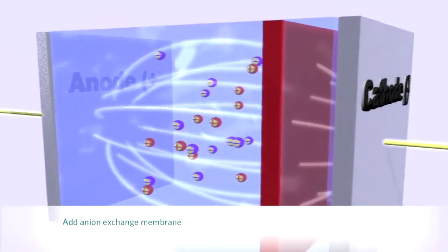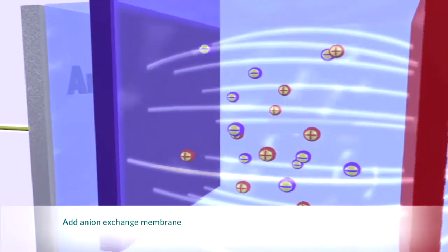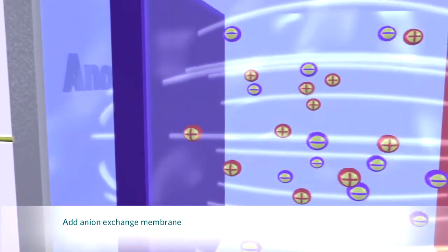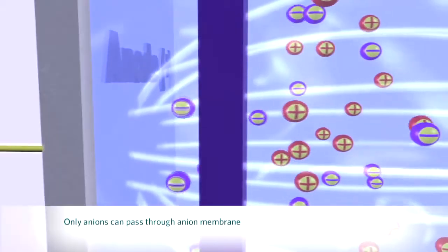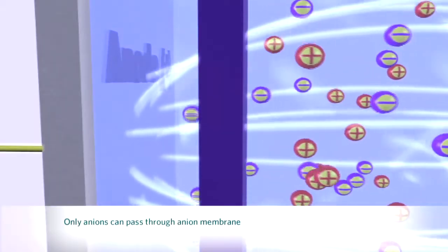When we insert another ion exchange membrane, this time made out of anion-selective resins, it will block the flow of cations and water molecules. Only anions will be able to pass through to the other side.